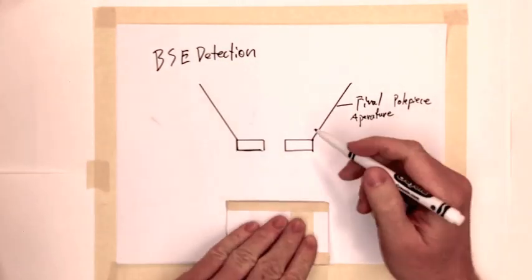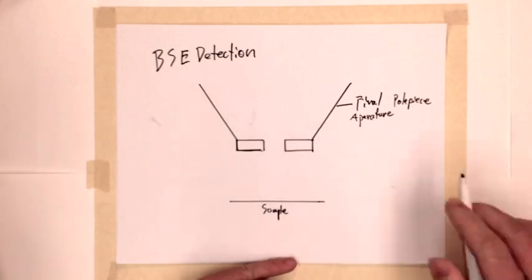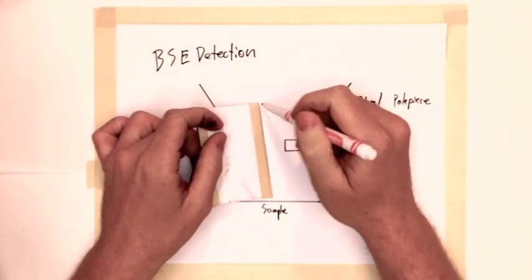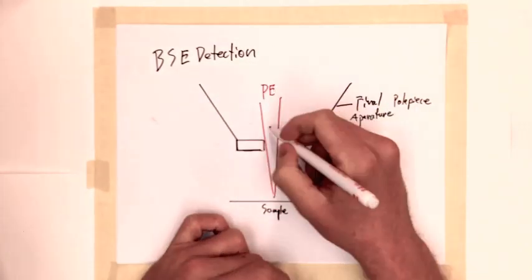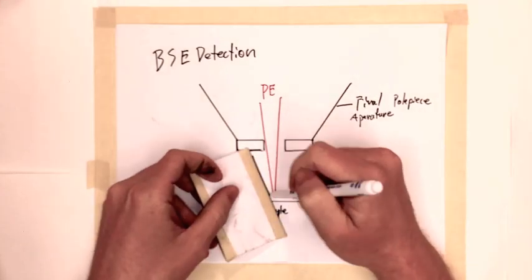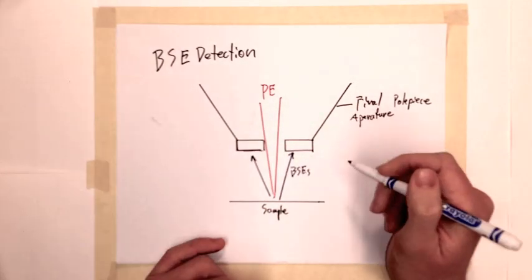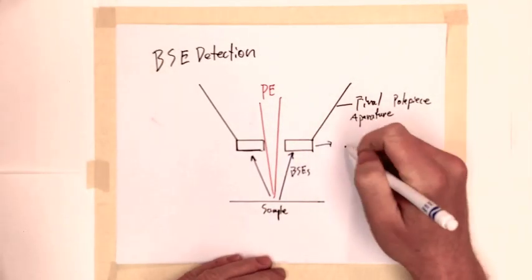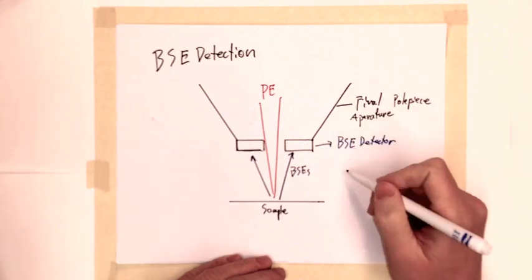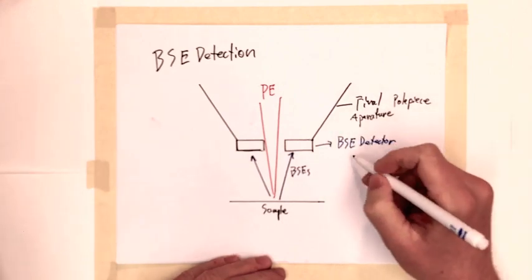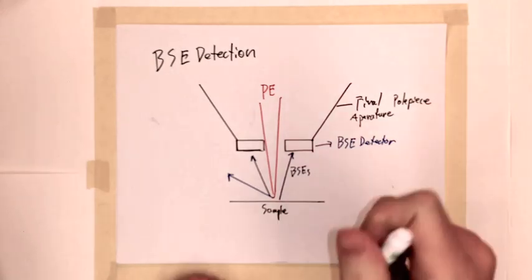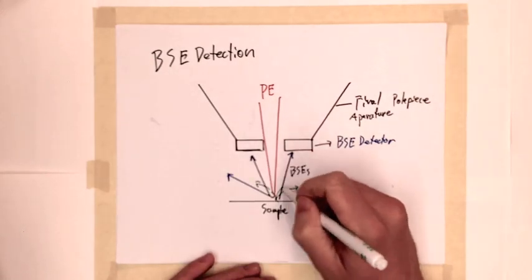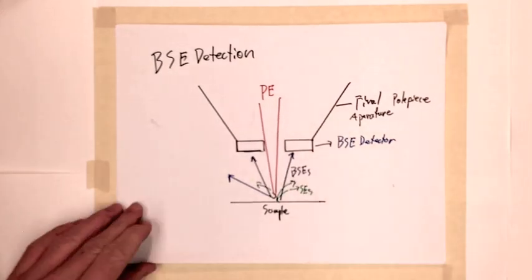The detectors are generally either solid state or scintillating configurations which provide an output response proportional to the electron energy. This implies that backscattered electrons having higher energy will make large contributions to the signal. However, the system will see any electrons that interact with the detector, and the output signal will integrate any number of the possible scattering processes.